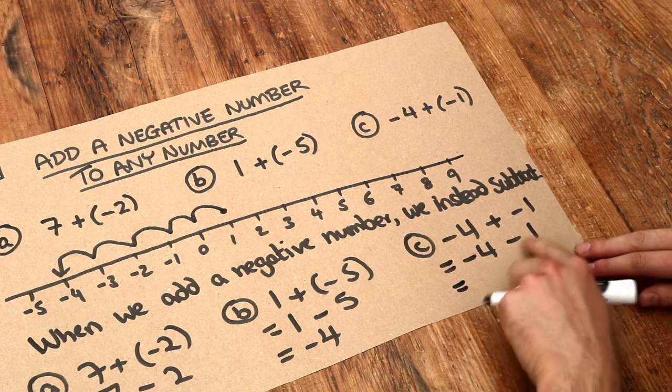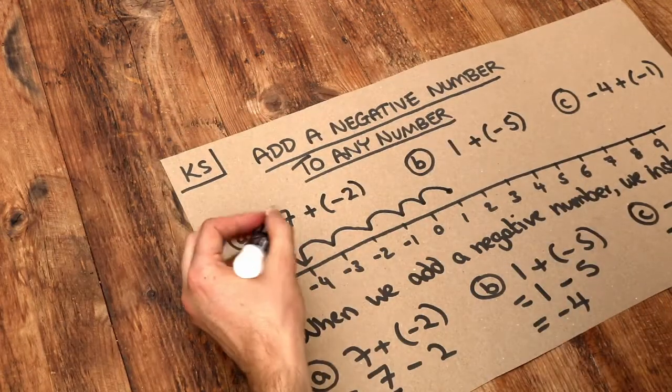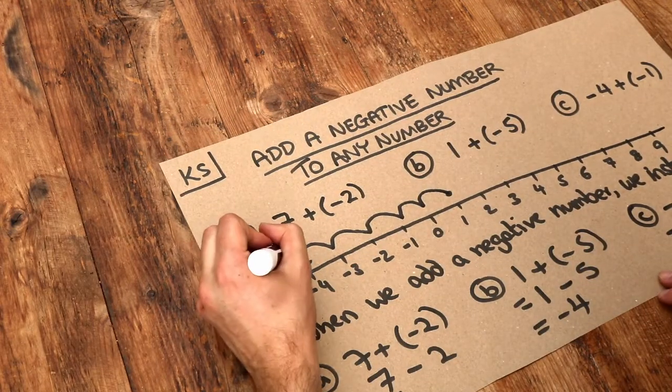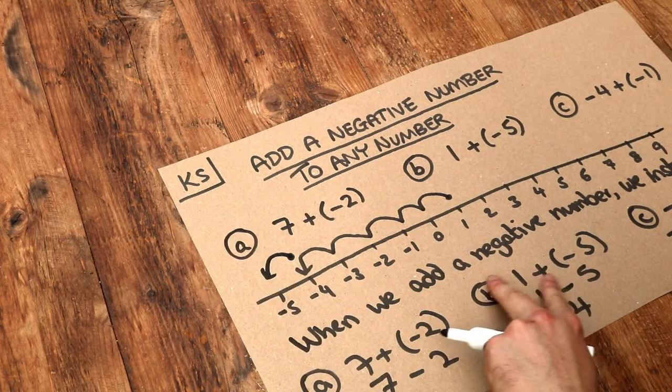Minus 4, and we're subtracting 1. So minus 4 is here. We're subtracting 1, we end up at minus 5.